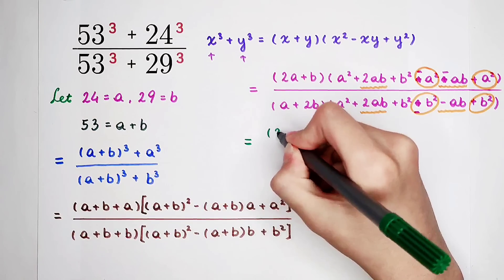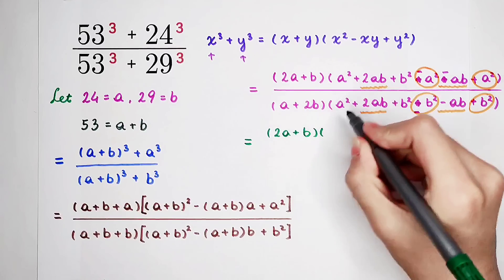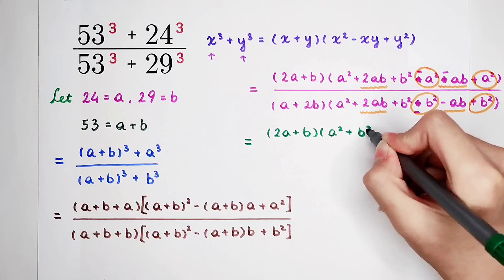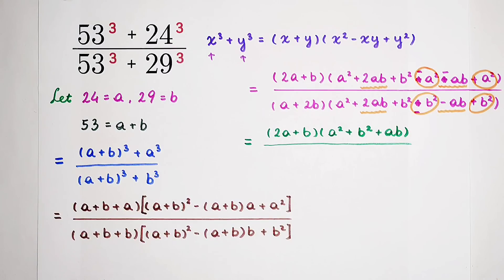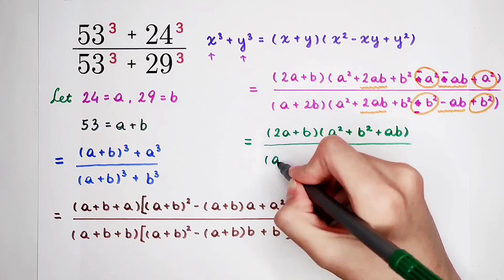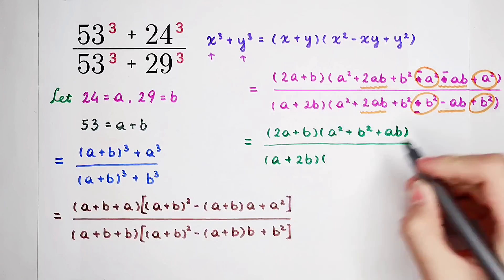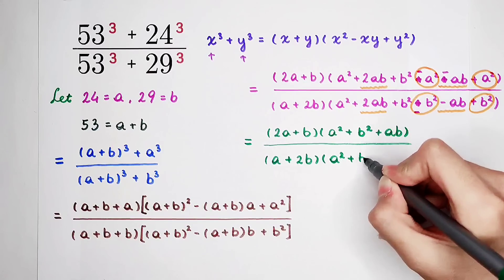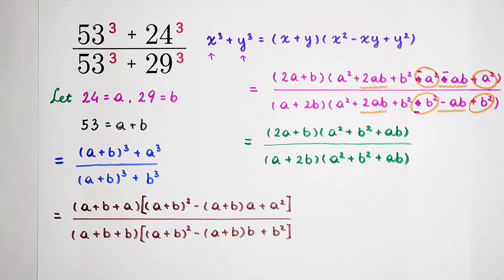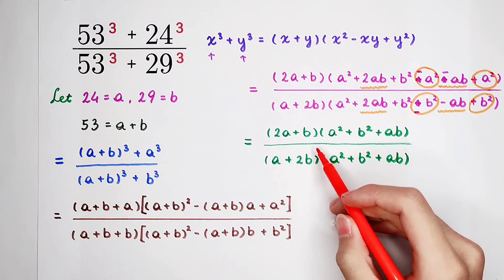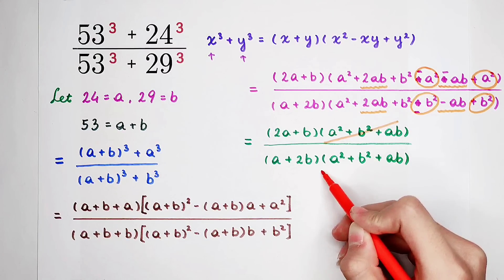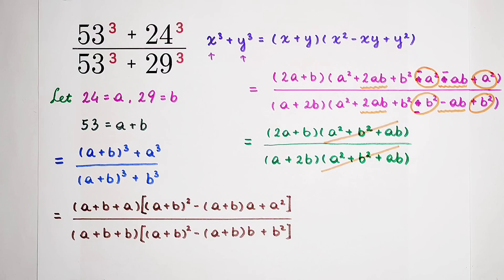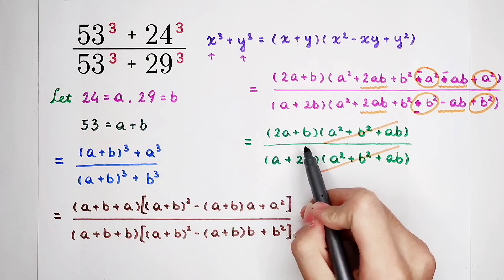In the end, 2a plus b times, in this bracket, it is a squared plus b squared plus 2ab minus ab plus ab. Without ruler, I can also draw it perfectly. Oh my god. Here, a plus 2b. And then times, in this bracket, a squared plus b squared plus 2ab minus ab plus ab left. And you can see that a squared plus b squared plus ab appears on the numerator. A squared plus b squared plus ab appears on the denominator. And a, b are not zero. So, they can cancel out each other. And our answer is 2a plus b divided by a plus 2b.